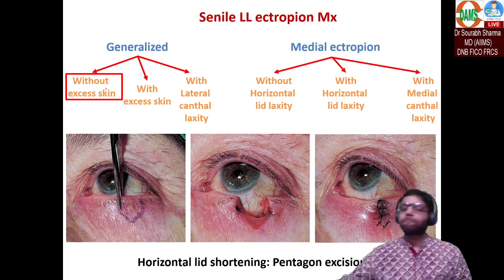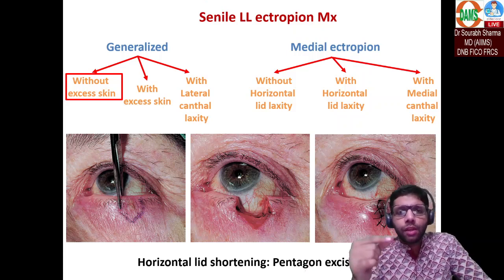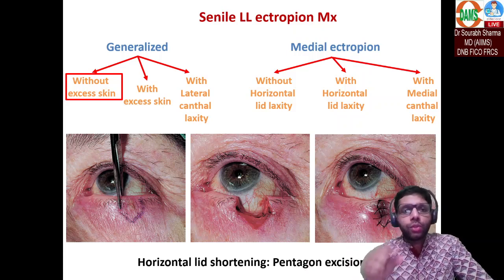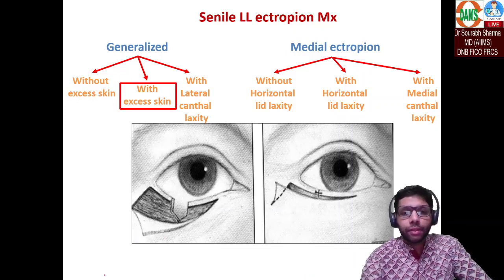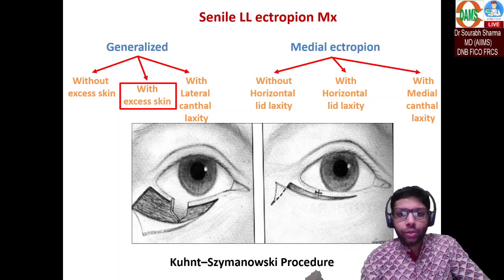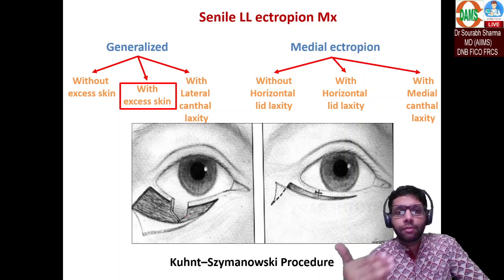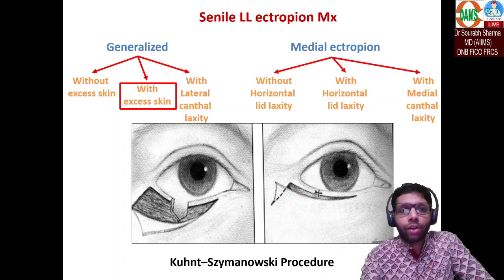If there is also excess skin contributing to the eyelid turning out, the excess skin is taken out along with the pentagon excision. This procedure is known as the Kuhnt-Szymanowski procedure — when there is excess skin, along with the pentagon you take out the excess skin. This is one step ahead of simple pentagon excision.